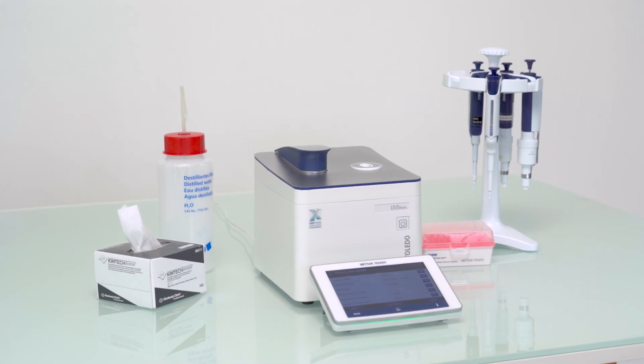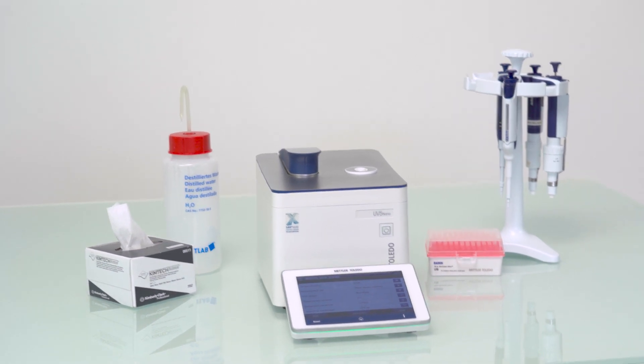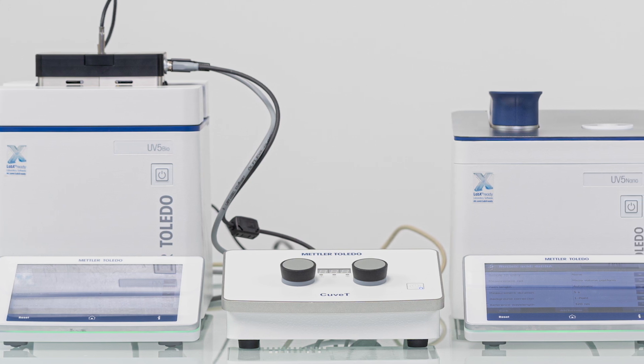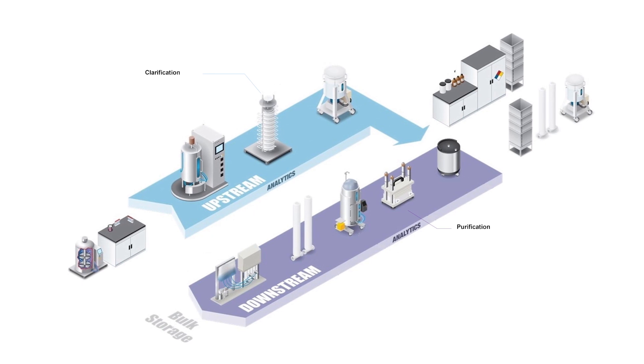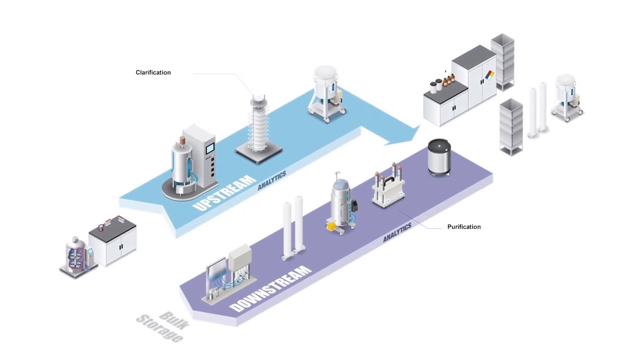Are you involved in the production and development of cell and gene therapies? Have you heard about a photometric method for quality control? Today I will introduce you to UV-VIS spectrophotometry, a powerful and efficient method to analyze the concentration and purity of nucleic acids and proteins in process steps such as clarification and purification.